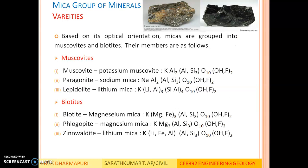Varieties: based on optical orientation, micas are grouped into two categories — muscovite micas and biotite micas. In muscovite mica, it is classified into muscovite, paragonite and lepidolite. If the mica contains potassium it is called potassium muscovite; if it contains sodium it is called paragonite; if it contains lithium it is called lepidolite. In biotite, the magnesium-containing mica is called biotite, the magnesium mica with different properties is called phlogopite, and the lithium mica is called zinnwaldite. The most commonly occurring minerals in this group are muscovite mica and biotite mica, shown in the figures on the slide.